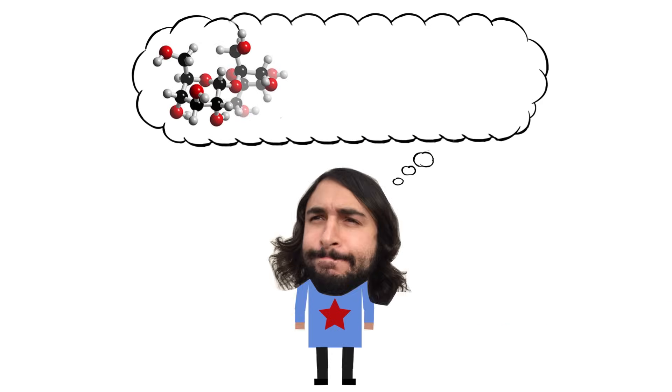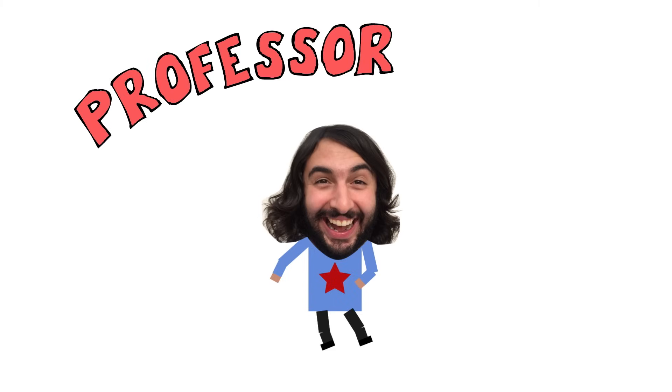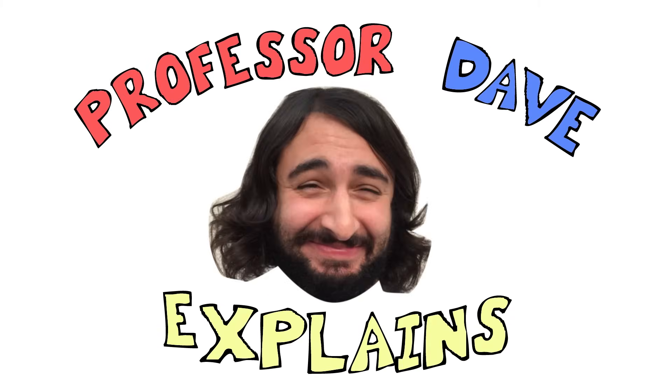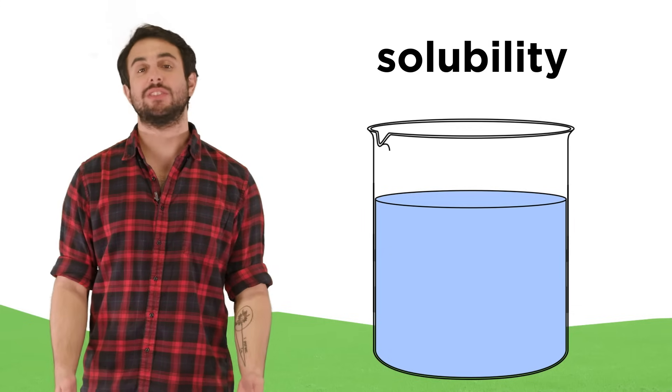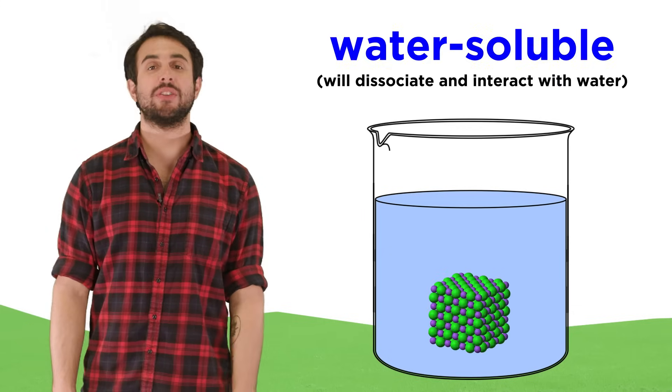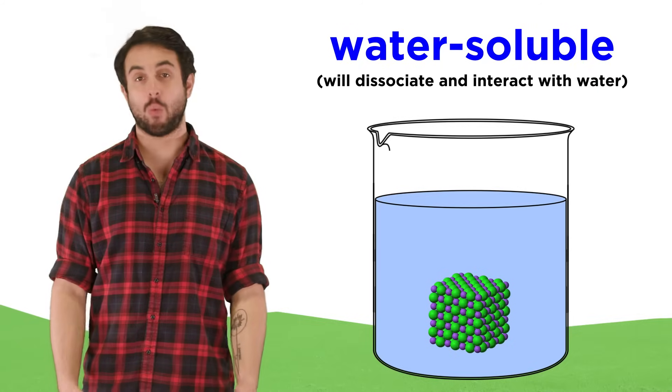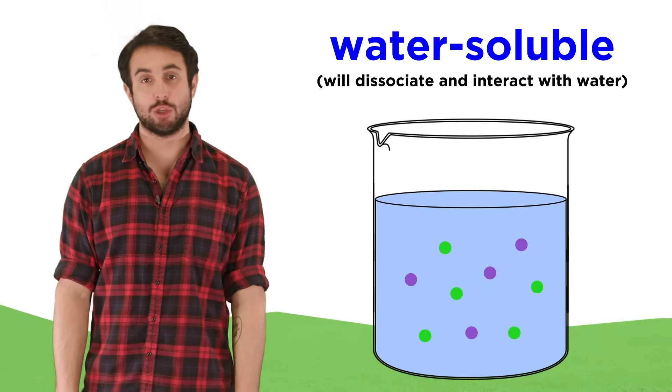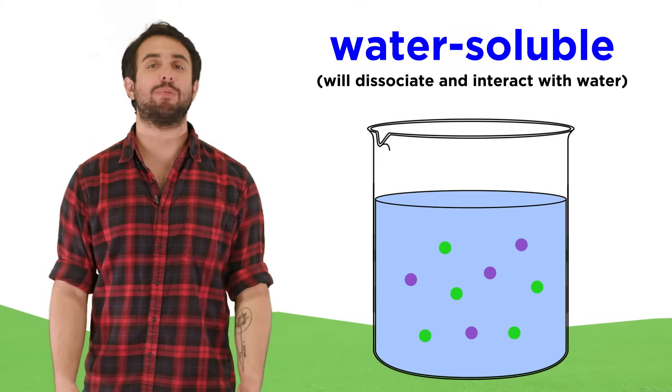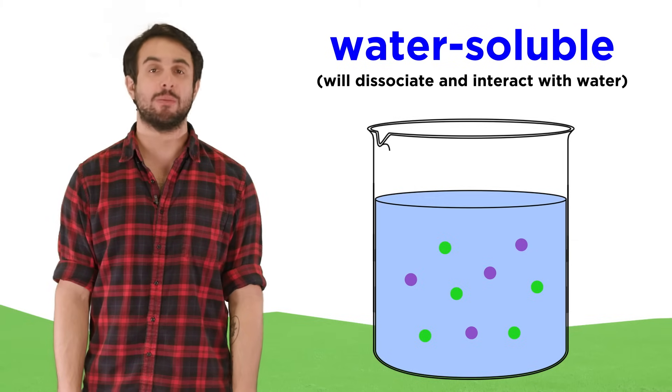Professor Dave here, let's talk solubility. When we first discussed solubility, we learned that some ionic compounds are water-soluble and will completely disperse in solution due to the ion-dipole interactions they will make with water molecules.